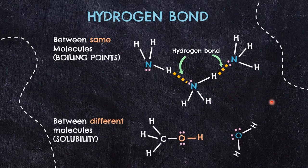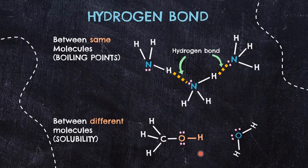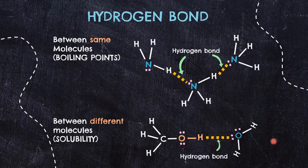Forces formed between different molecules are used to explain the solubility of a molecule in a polar solvent. In this example, methanol dissolving in water: methanol has hydrogen attached to oxygen, obeying the first requirement. The neighboring molecule, water, has a lone pair on it. So a hydrogen bond is formed, meaning methanol is soluble in water.